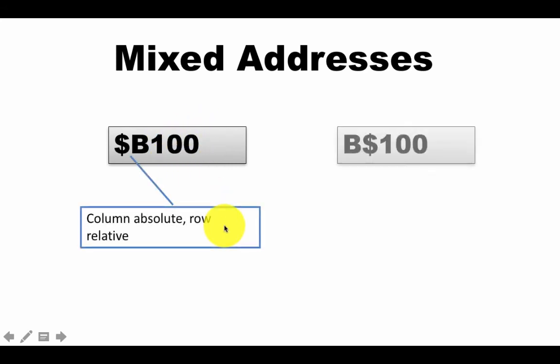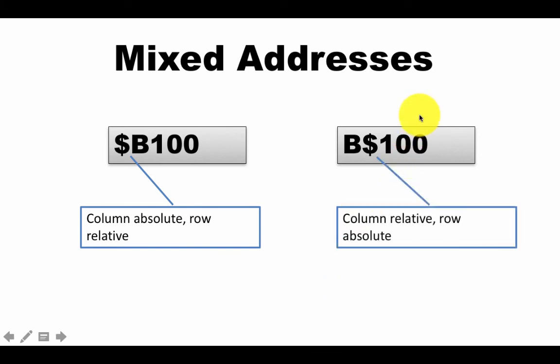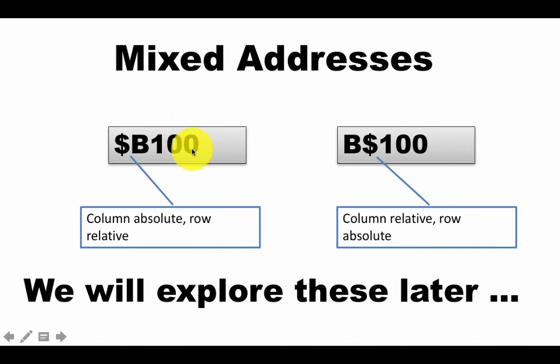And you can also have an address like B$100 in which case the row is absolute, column is relative. So, when you copy and paste, the column will change. We'll explore these later on and to understand the context in which these are required again, don't worry about it for now. We'll explore these things later on in a separate lecture altogether, right? For the most part, if you understand relative and absolute addresses, you can get by. Like I said, 80%, 90% of your design in spreadsheets will already be accounted for by just those two types of addresses but there are some scenarios in which mixed addresses are extraordinarily useful. So, we'll look at those scenarios later on.